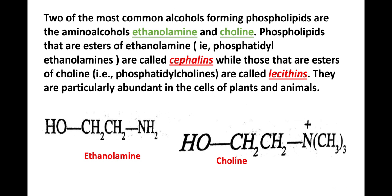Two of the most common alcohols forming phospholipids are the amino alcohols ethanolamine and choline. Phospholipids that are esters of ethanolamine, i.e. phosphatidylethanolamines, are called cephalins, while those that are esters of choline, i.e. phosphatidylcholines, are called lecithins. They are particularly abundant in the cells of plants and animals.